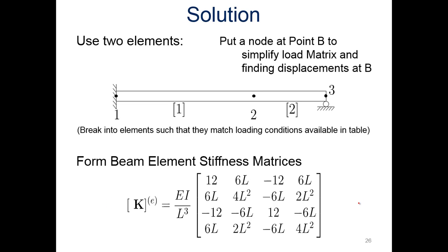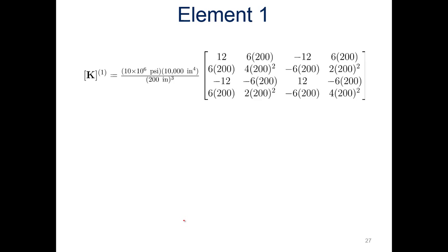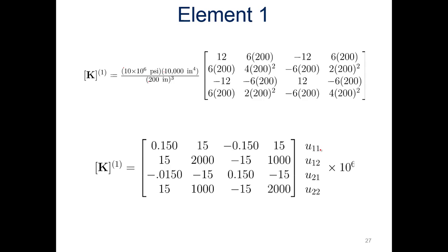So the form of the beam element stiffness matrix from before is this. Again, generic form for any beam, for any beam element. For element one, if we plug in our modulus and our moment of inertia and the length, we come up with, this is our values.